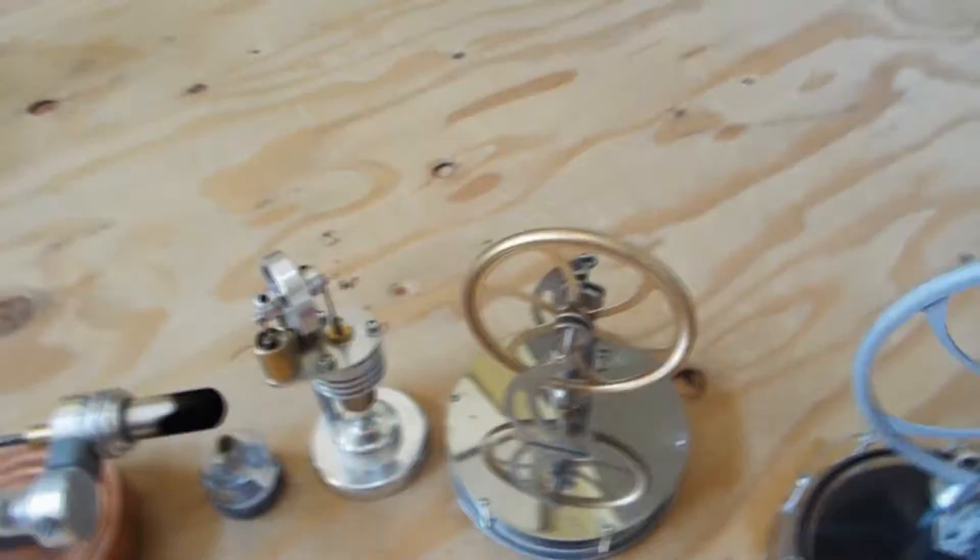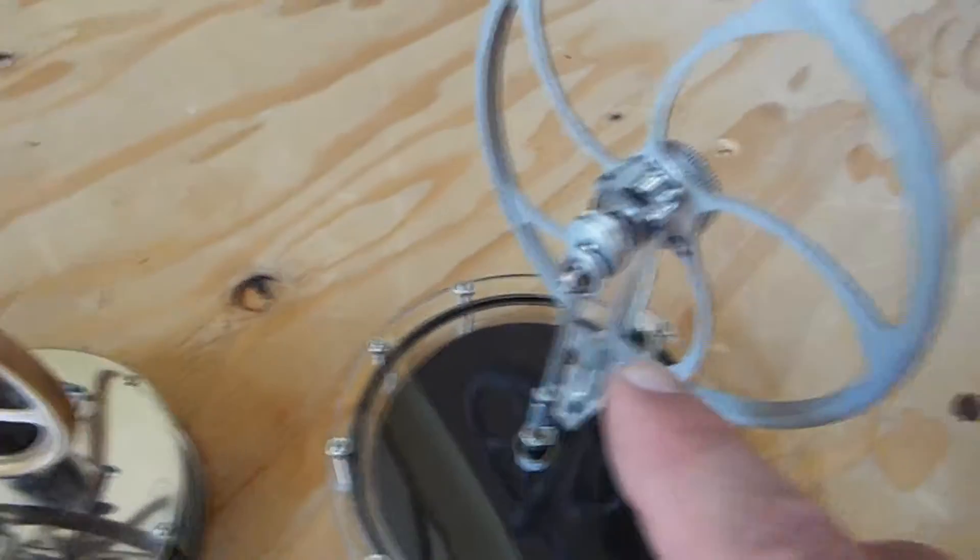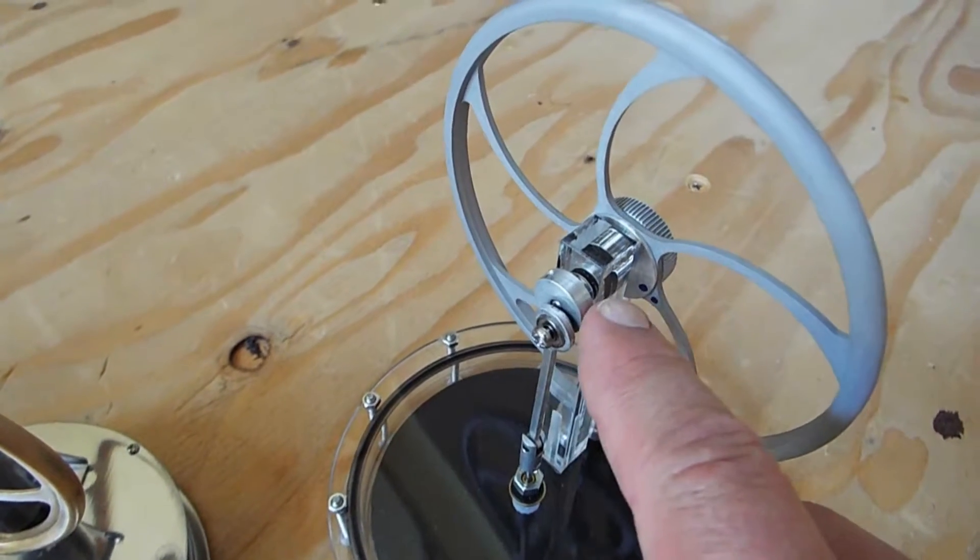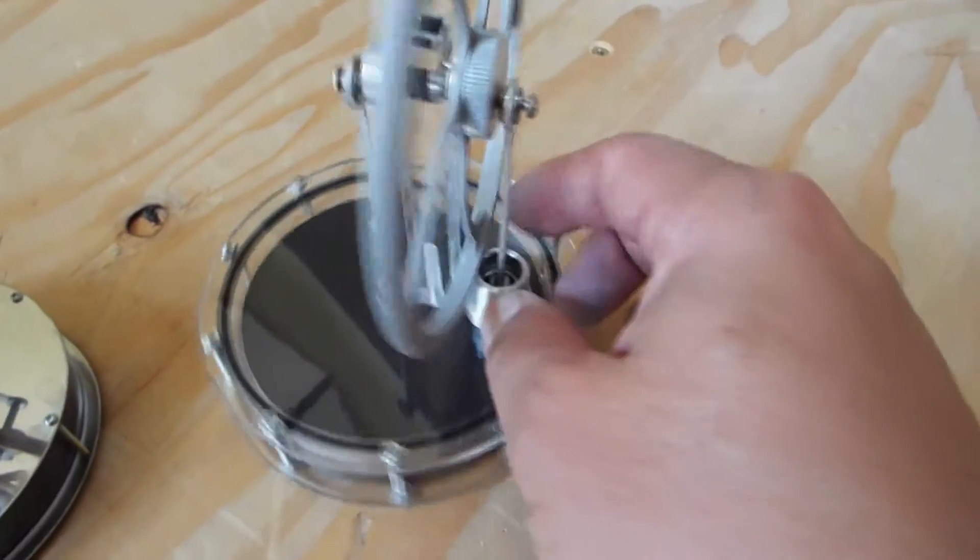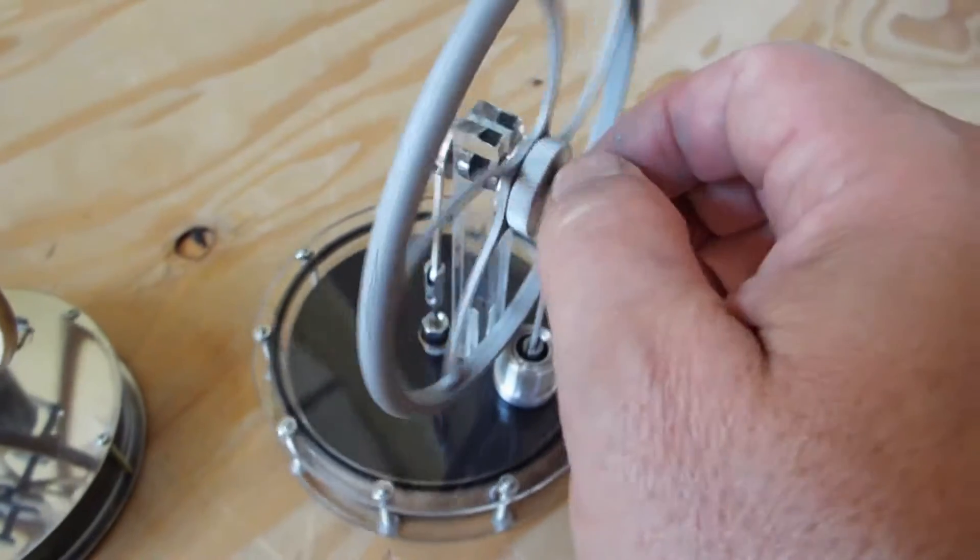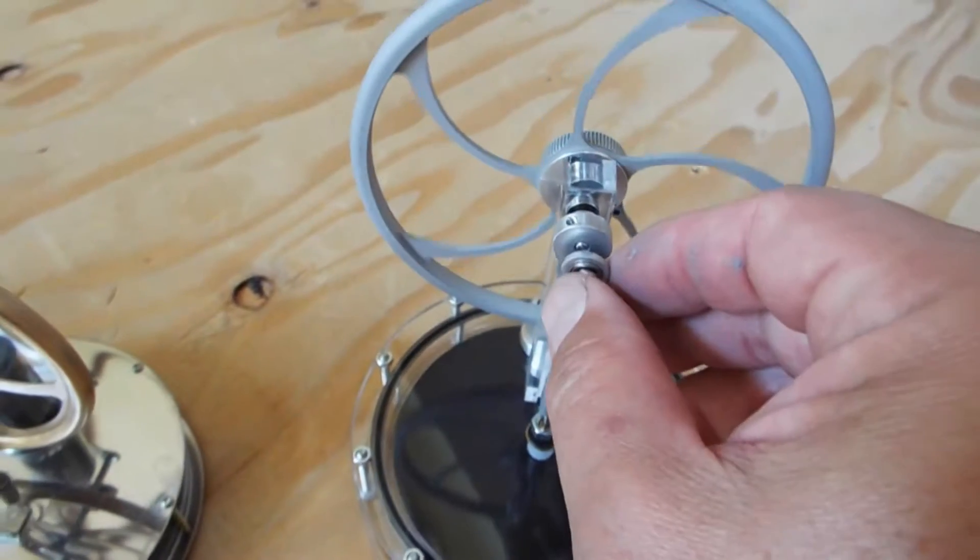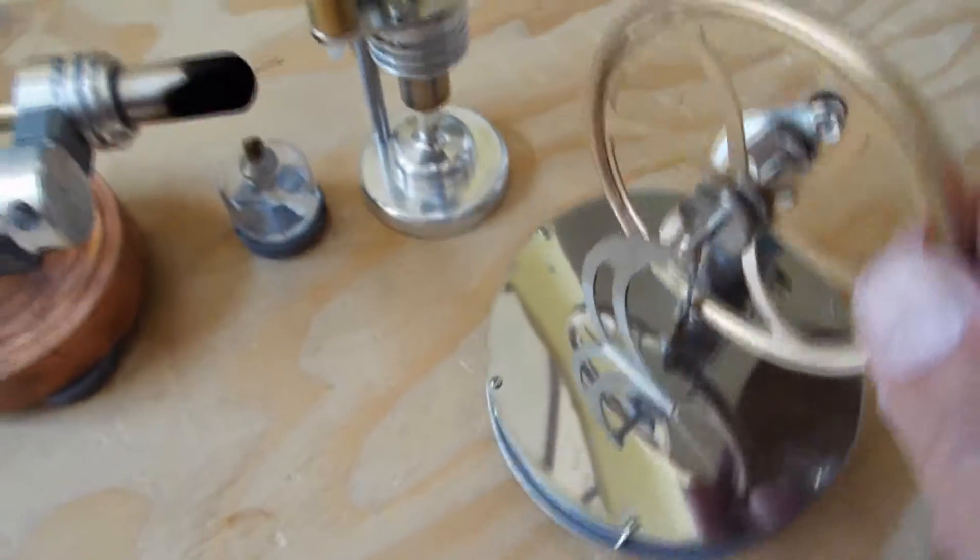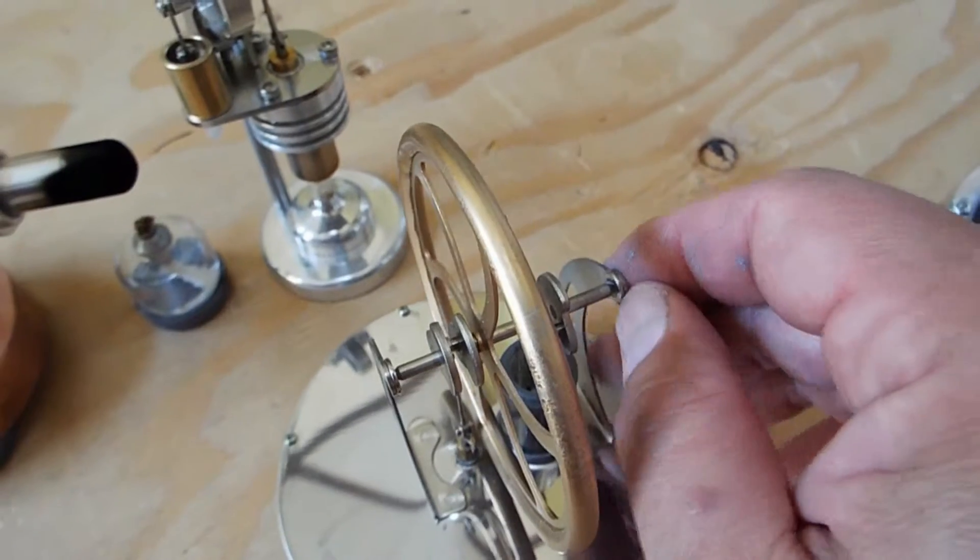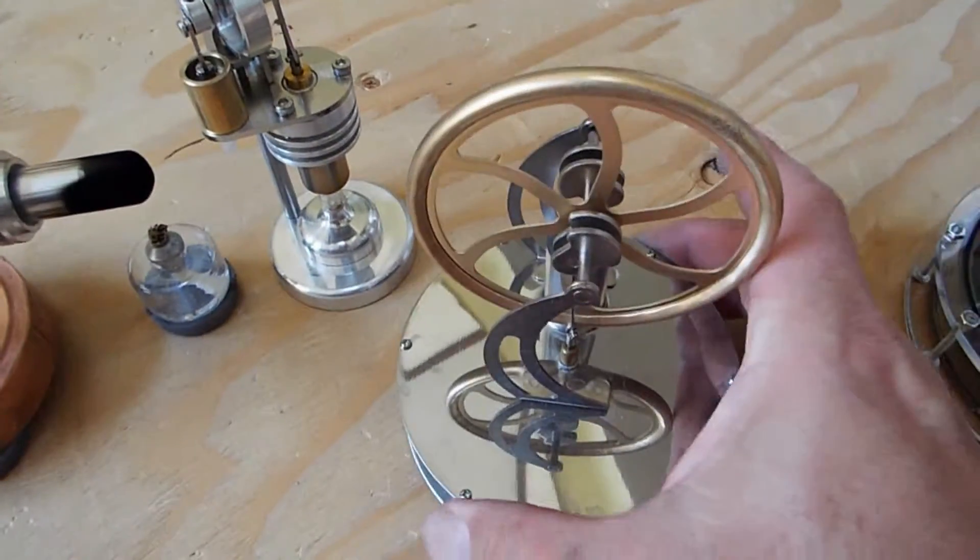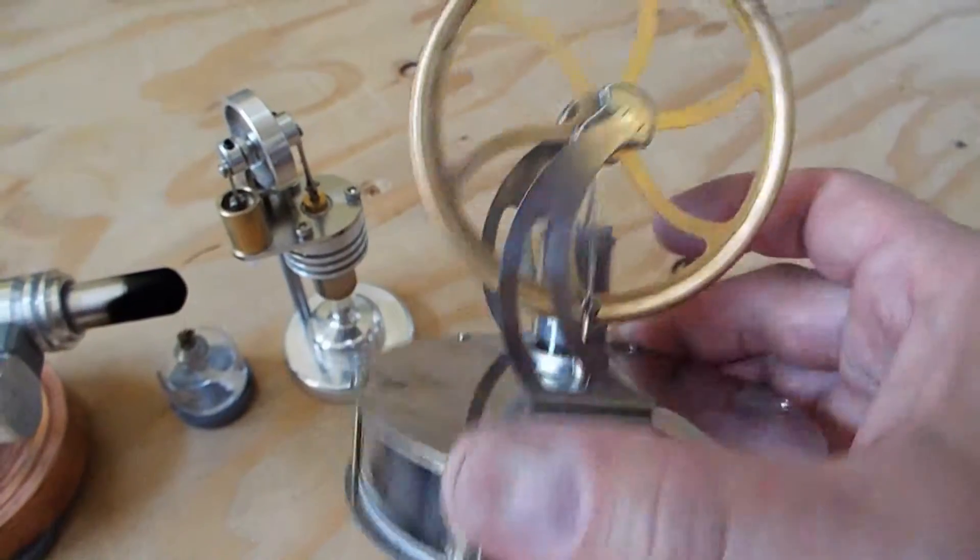This second Stirling engine is built pretty similar to the solar engine. But the solar engine actually has ball bearings in all the points that move except for this connector bar and the one in the secondary piston. This one just uses pointy pieces of steel into a little pocket. But this one will run off of coffee cup hot temperatures. It takes about 20 degrees C for this one to run.